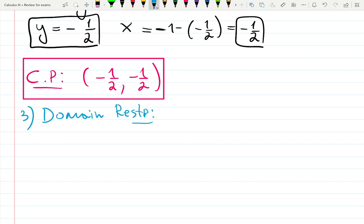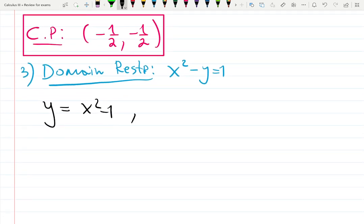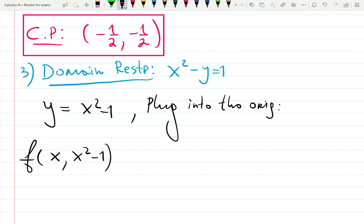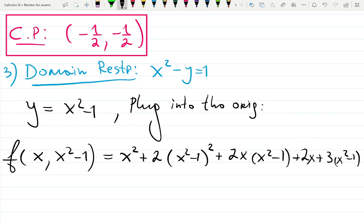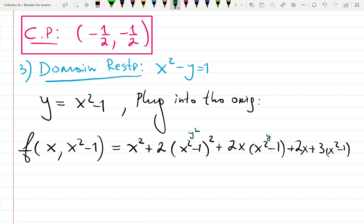The domain restriction is the parabola which is x squared minus y equals 1. We could solve for y, that will be x squared minus 1, and then plug into the original. So f at x comma x squared minus 1 will be plugging into the original: x squared plus 2 times x squared minus 1 squared plus 2x times x squared minus 1 plus 2x plus 3 times x squared minus 1.